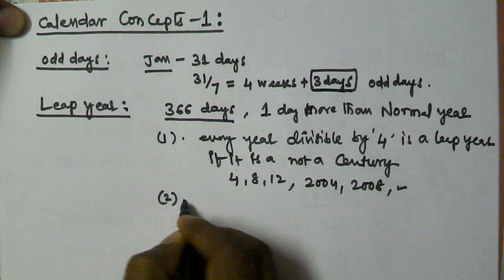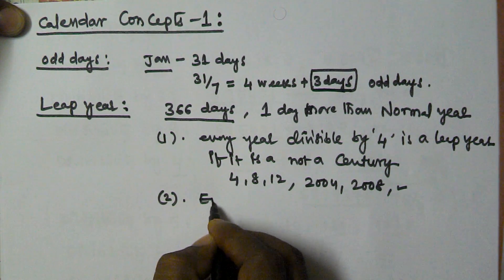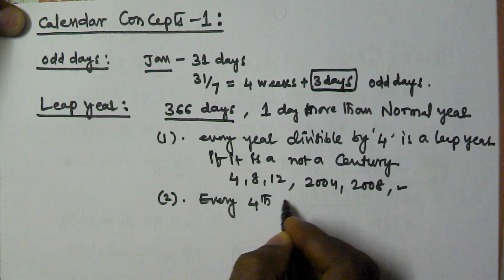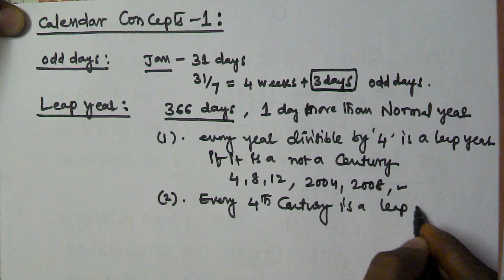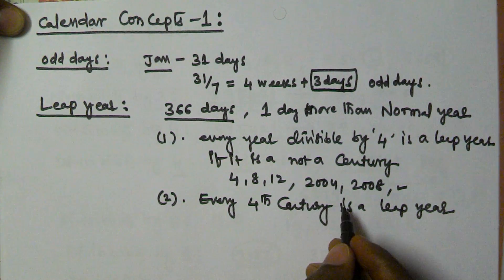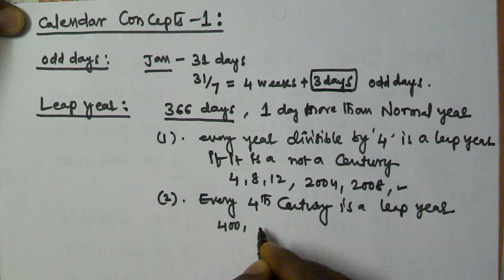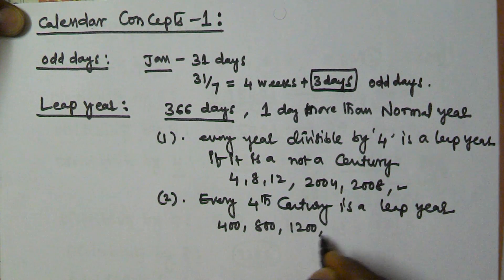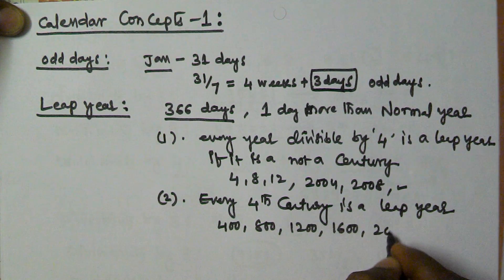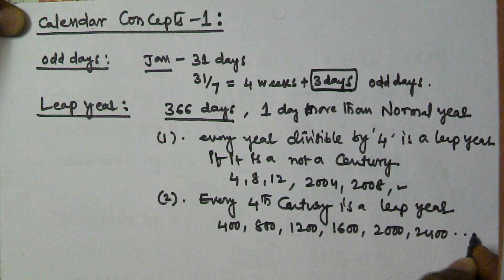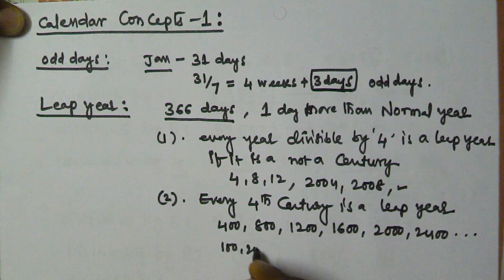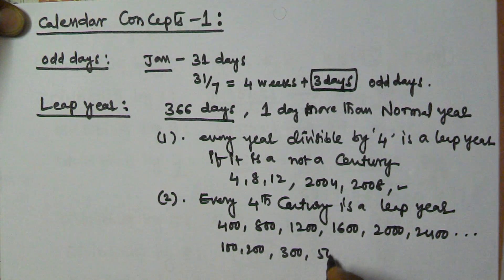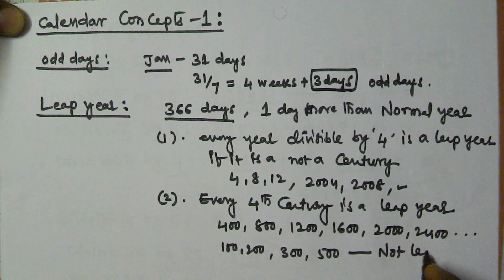The second property of leap year is: every 4th century is a leap year. So 400, 800, 1200, 1600, 2000, 2400 — these all are leap years. And 100, 200, 300, 500 — these are non-leap years.